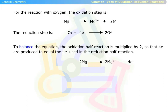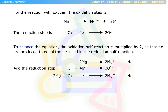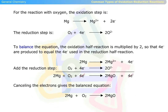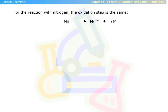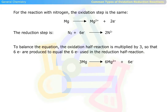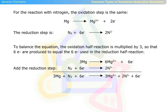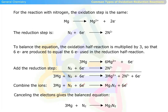This equation is seen below, and this is the reduction step. Cancelling the electrons gives the balanced equation. For the reaction with nitrogen, the oxidation step is the same, and this is the reduction step. To balance the equation, the oxidation half reaction is multiplied by 3 so that six negative electrons are produced to equal the six negative electrons used in the reduction half reaction. Then we combine the ions and cancel the electrons, which gives the balanced equation seen below.